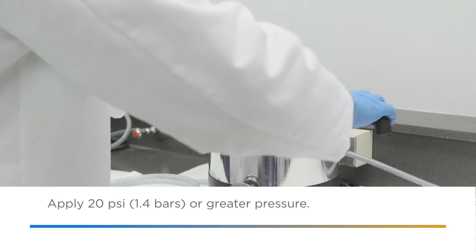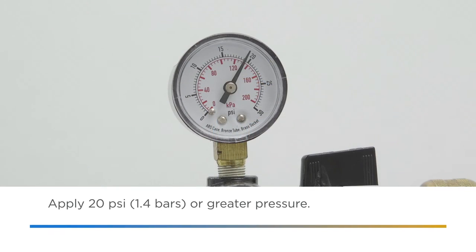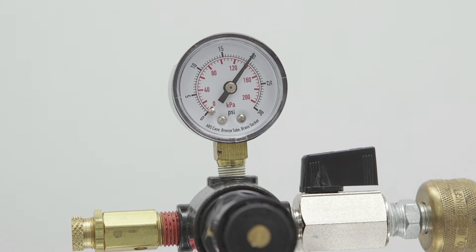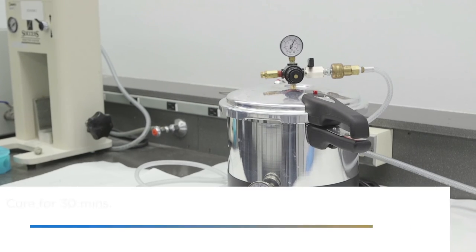Immediately close the pressure pot and apply 20 PSI or 1.4 bars or greater pressure. Do not delay in applying pressure as that may introduce porosity. Cure for 30 minutes.